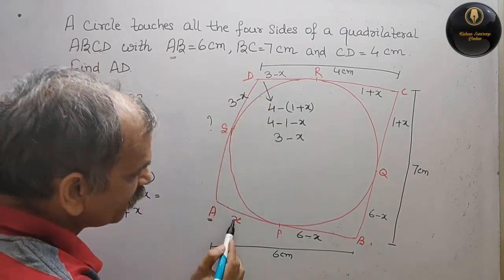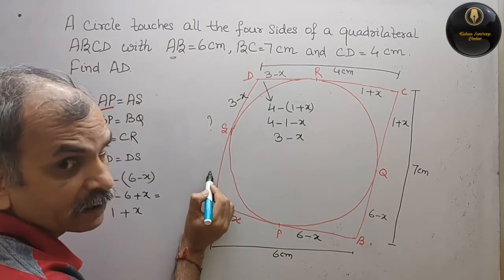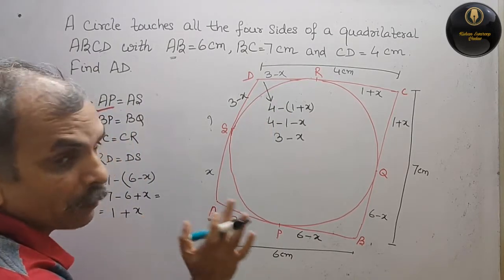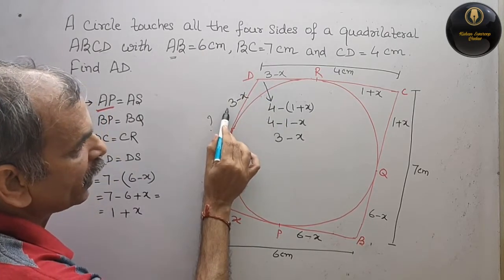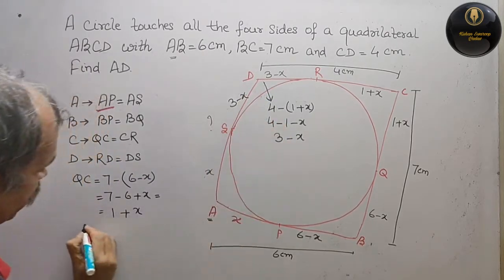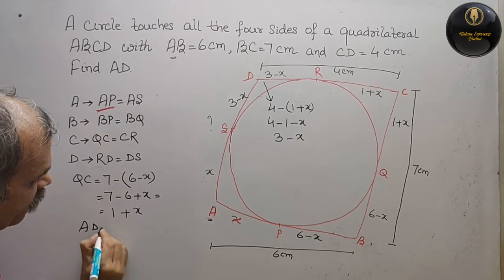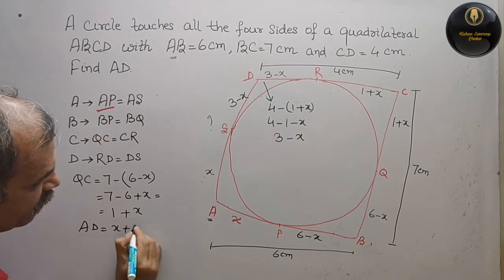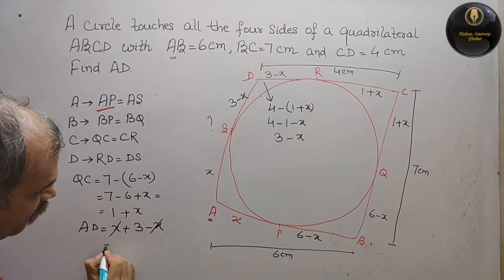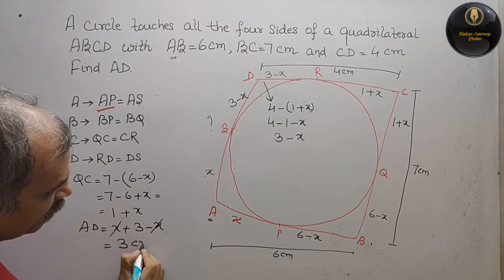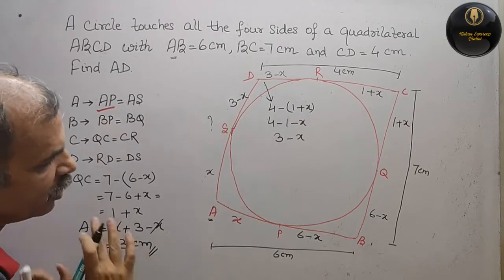Now, if this is your X, this is also X. So what do we need to find? AD. That means X plus 3 minus X. Now we can say AD is equal to X plus 3 minus X. Minus X and plus X cancel. That is equal to 3 centimeter. So AD is 3 centimeter.